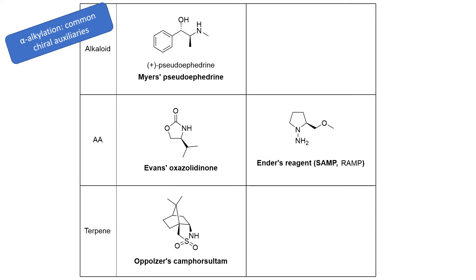In the left column, we have auxiliaries for carboxylic acid derivatives. We've got Meyer's Pseudoephedrine, Evans' Oxazolidinone, and Opolzer's Camphor-Soltam. They're all derived from natural products — alkaloids, amino acids, and terpenes. In addition, there's Ender's Reagent, useful for ketones and aldehydes.